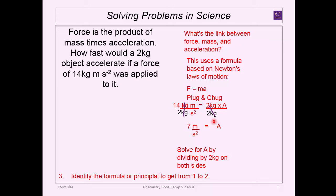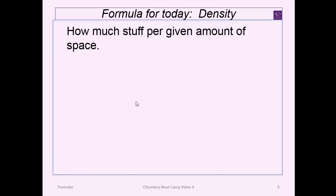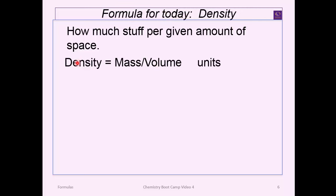If the units don't work out, convert to units that will cancel correctly, then do your calculation. Now we're going to work on another formula: density. Whenever you learn a dimension like density, first put it in your own words. The way I think about density: it's how much stuff per given amount of space. The actual formula is density equals mass divided by volume.